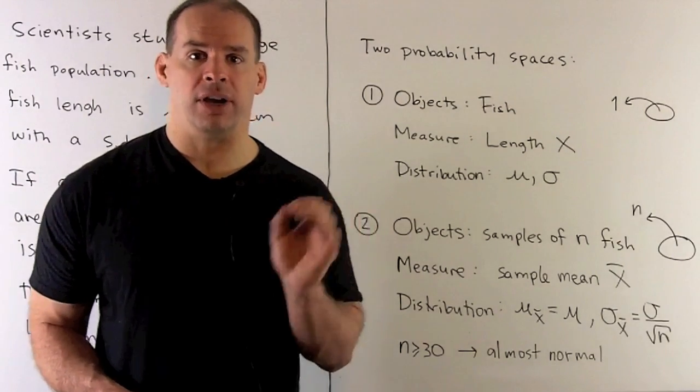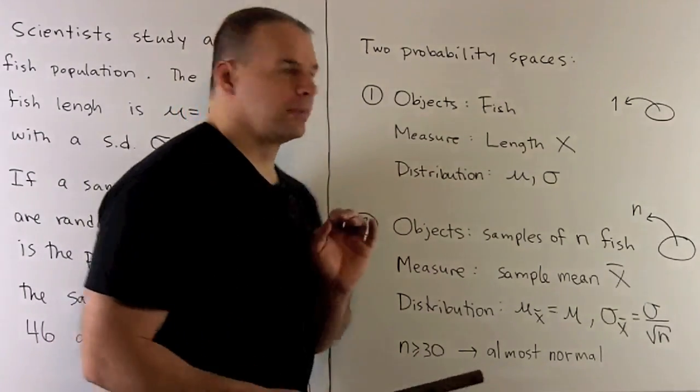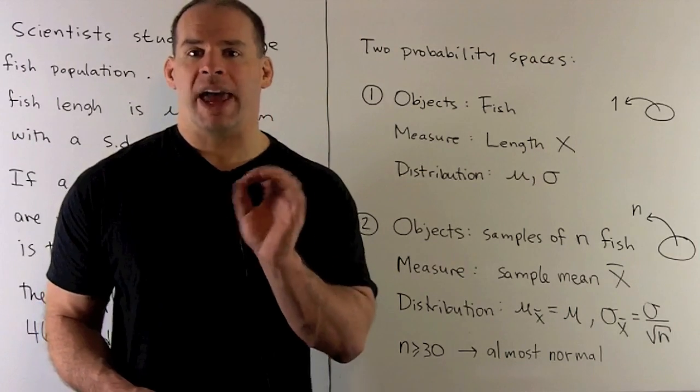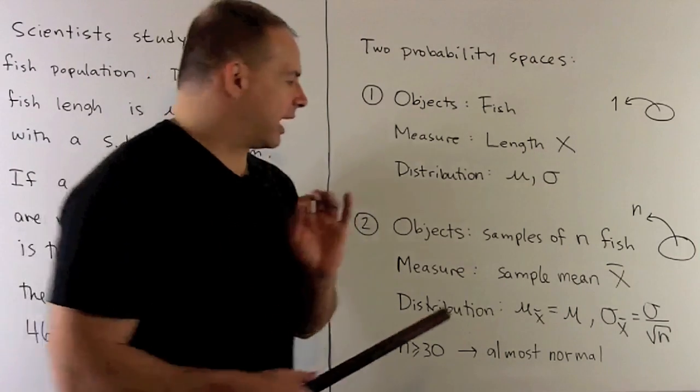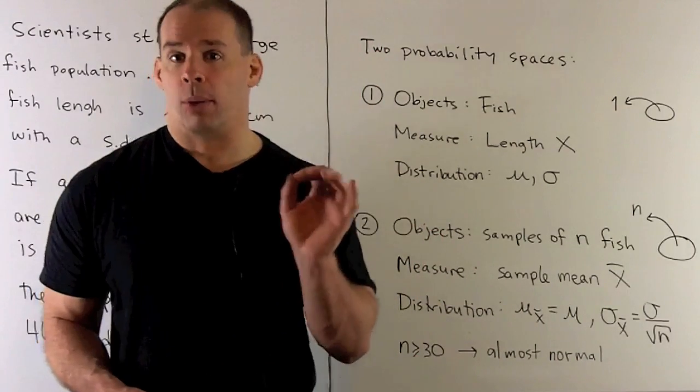By the Central Limit Theorem, if your sample size is greater than or equal to 30, this new distribution is going to be almost normal. So if I want to answer questions about the sample mean, I'm going to use a normal distribution.